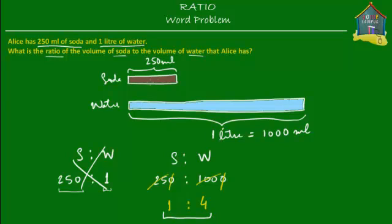This ratio of 1 to 4 tells us that the amount of soda to the amount of water Alice has is 1 part to 4 parts — meaning if she has 1 part of soda, she has 4 times as much water. So if the brown block represents 1 unit of soda, then the water is 4 times as much, meaning four such brown units fit into the big blue block of water: 1, 2, 3, and 4.